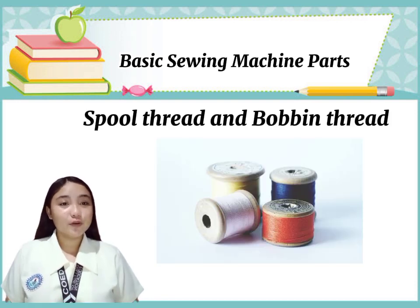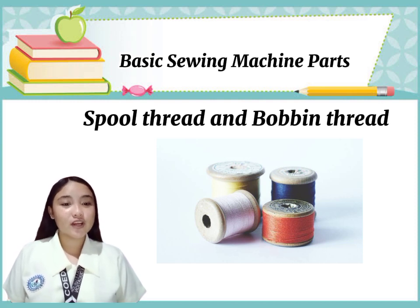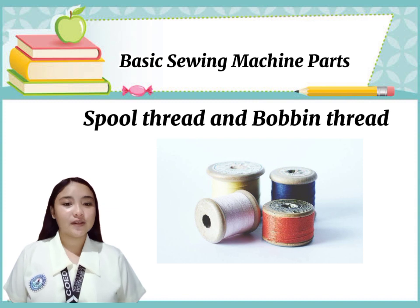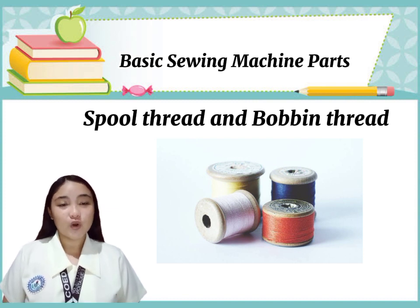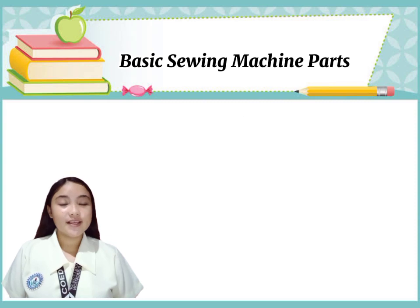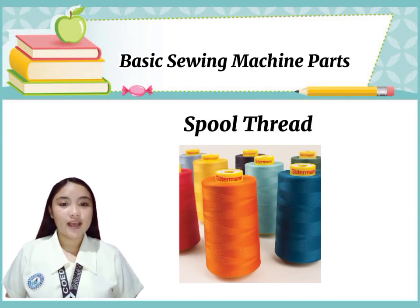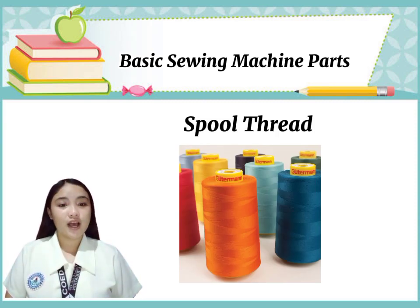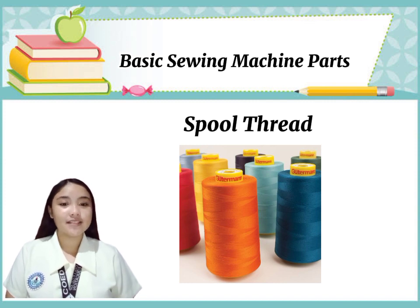Fifth, bobbin winder stopper — stops winding the bobbin when it reaches capacity. Sixth, spool thread and the bobbin thread. The bobbin is threaded by the spool thread by being placed on the bobbin winder spindle, which is on top of the machine. Seventh, spool thread — comes from the top of the machine and goes through the upper thread guide, while the bobbin thread is under the needle and goes through the bobbin thread guide.